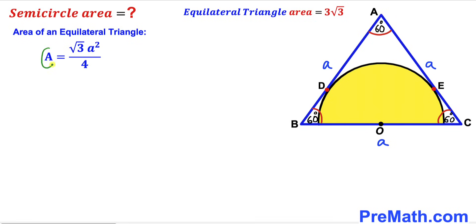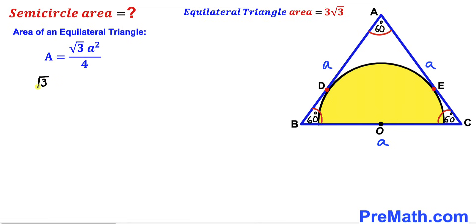Let's recall the area formula: the area of an equilateral triangle equals square root of 3 times a squared divided by 4, where a is the side length. Substituting the given area of 3 times square root of 3, we get square root of 3 divided by 4 times a squared equals 3 times square root of 3. The square root of 3 cancels on both sides, leaving us with a squared divided by 4 equals 3. Multiplying both sides by 4 to remove the fraction gives us a squared equals 12.